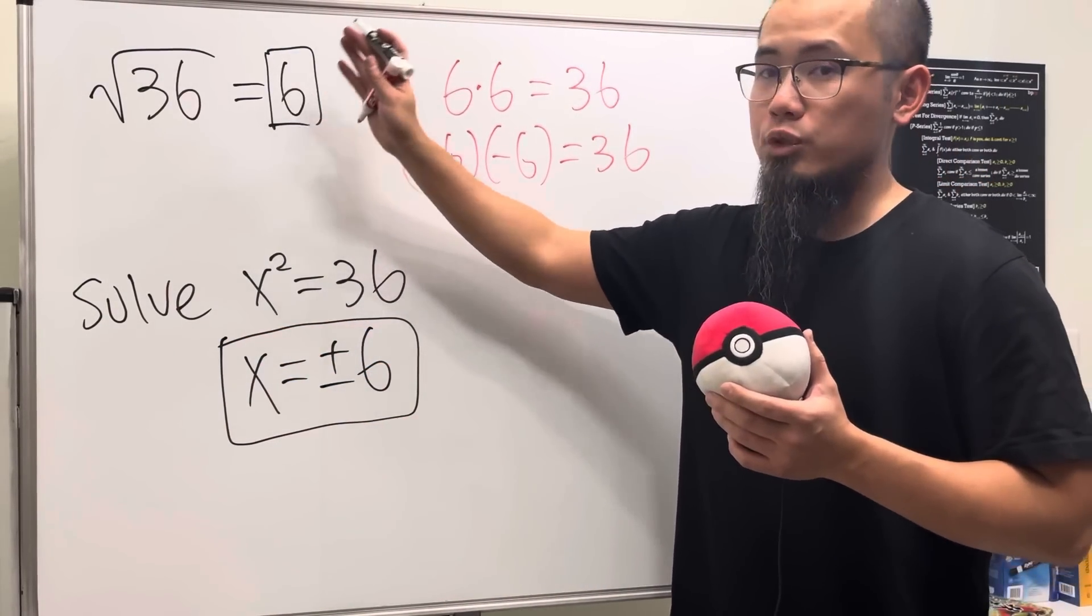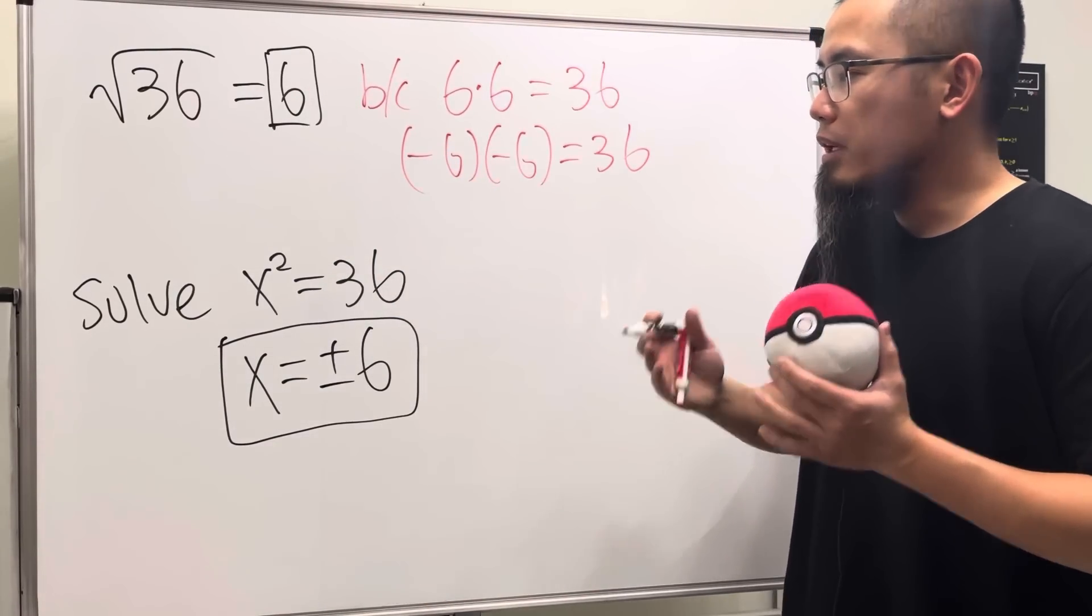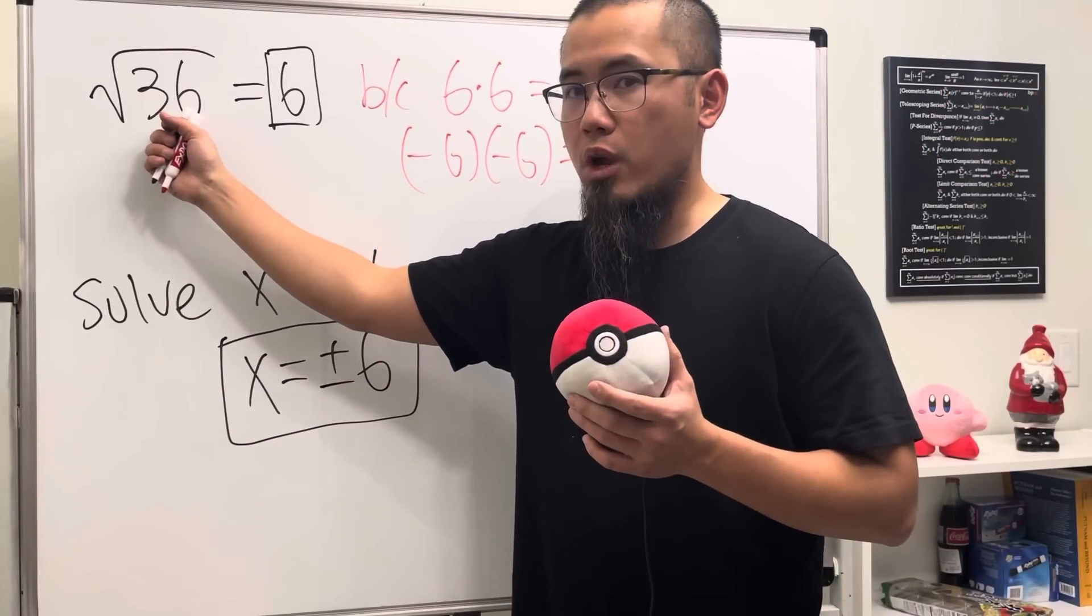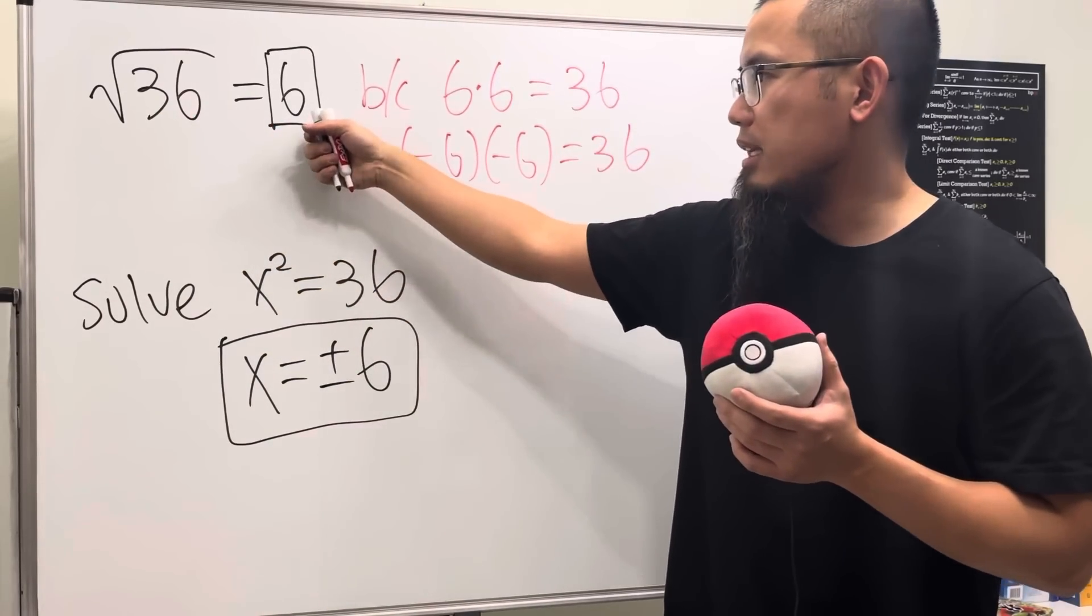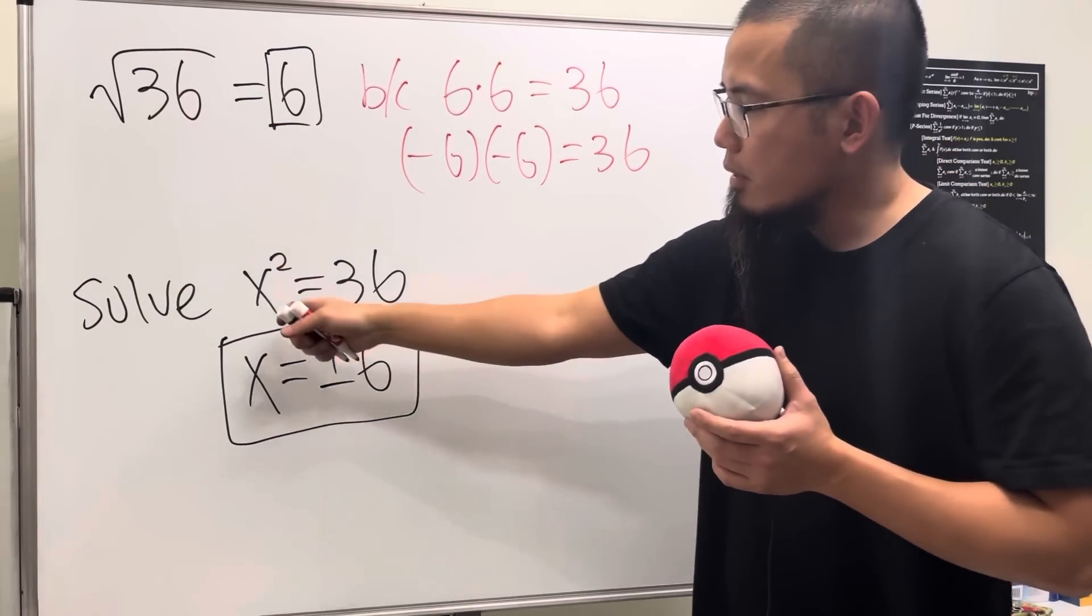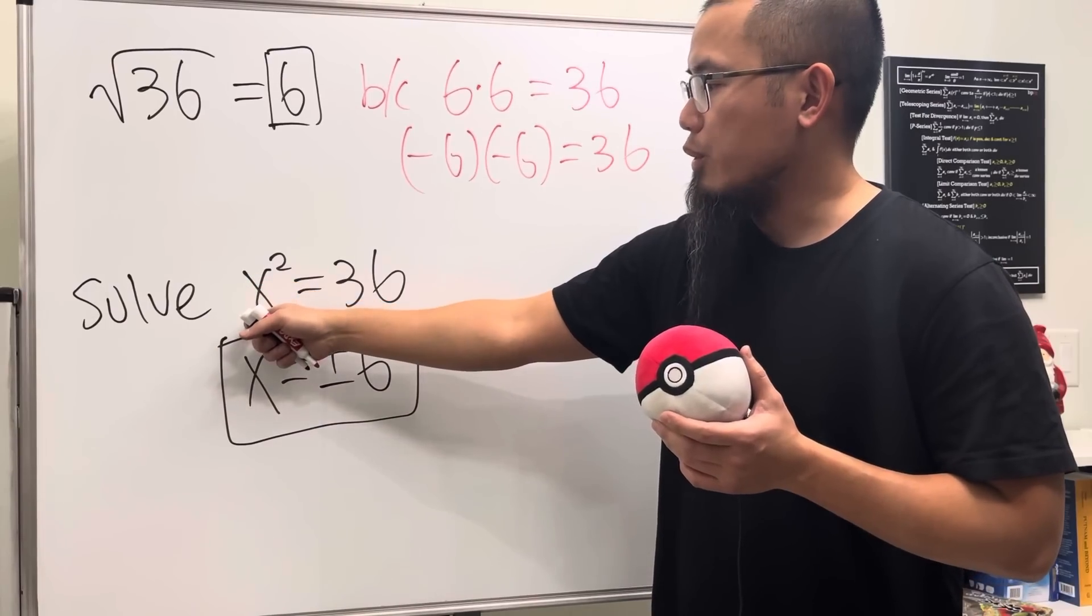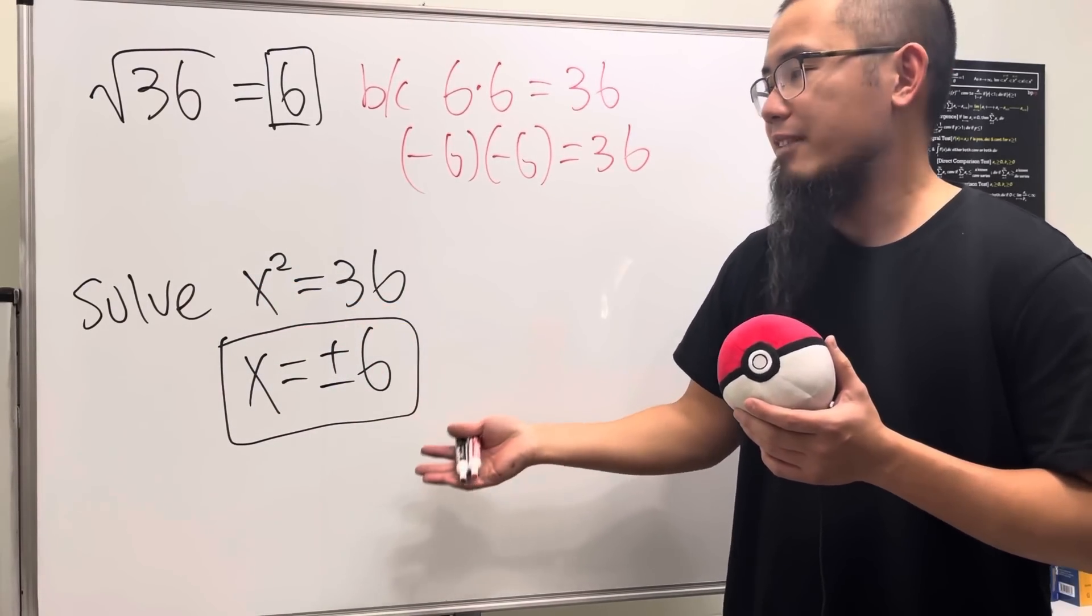However, over here, we just have one. So, make sure that you know the difference when we are trying to compute the square root, where we should just get the positive answer right here, or when we are trying to solve an equation, where we can possibly have more than one answer.